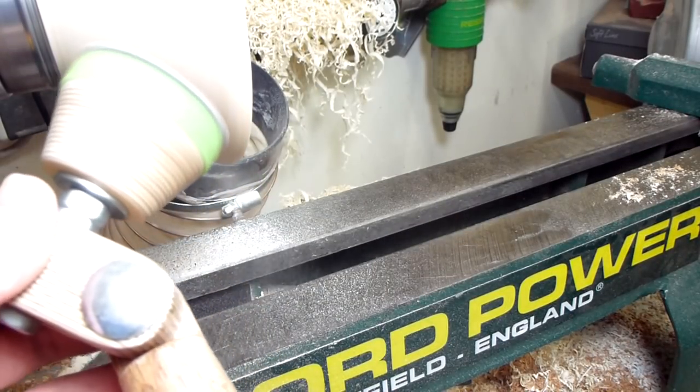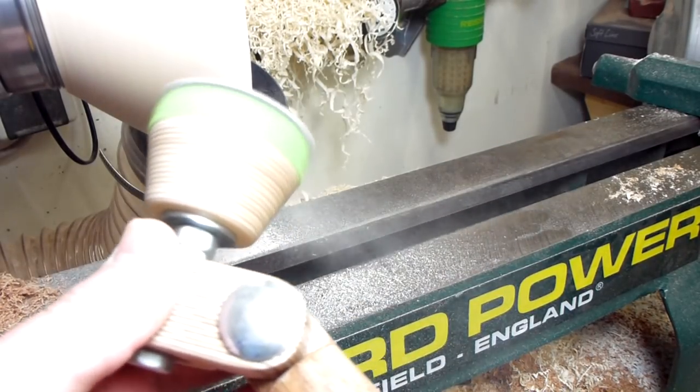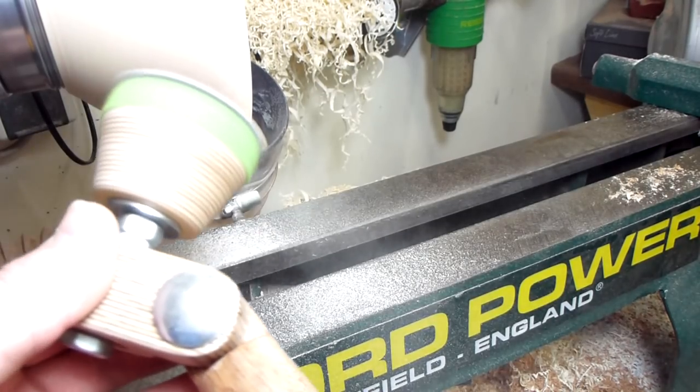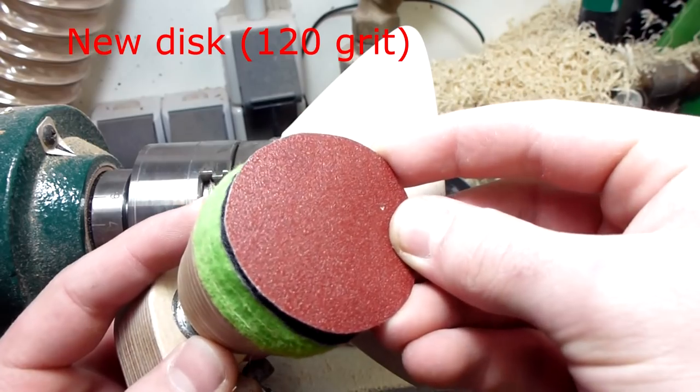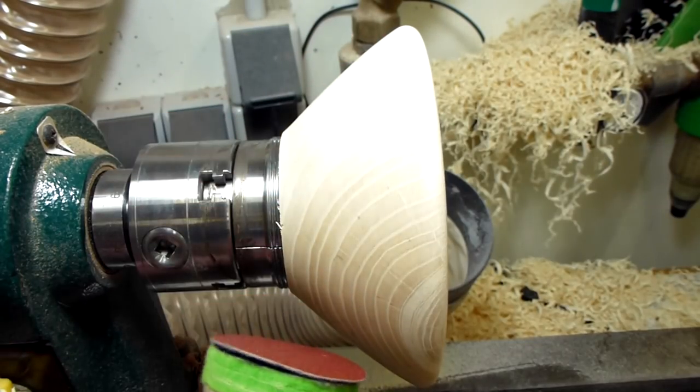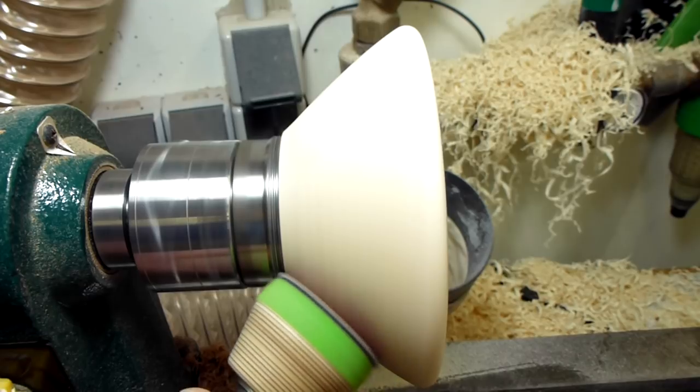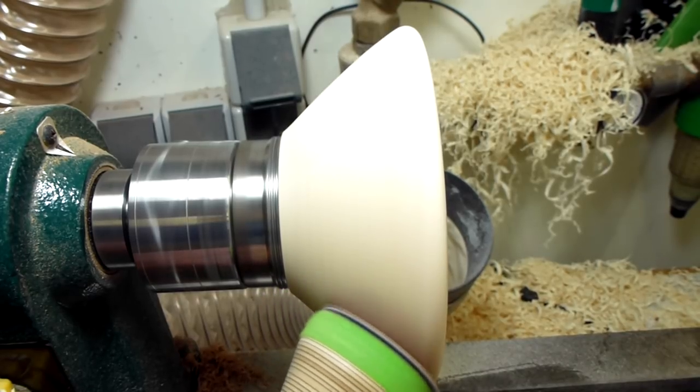The other nice thing about it is that it clears the sanding dust really well. With just hand sanding I found that I pretty often sand the sanding dust on the surface more than the actual surface. And the sandpaper clogs up very fast. Here the dust just flies away because of the spinning.